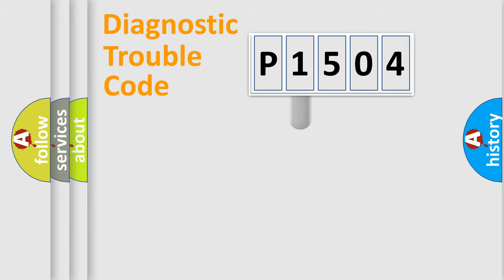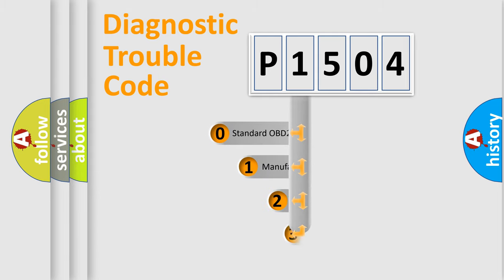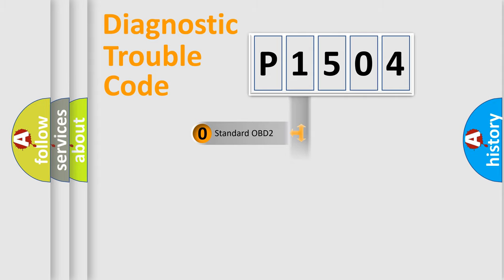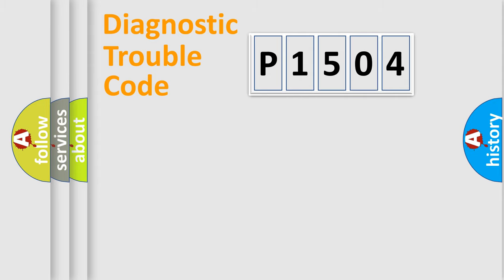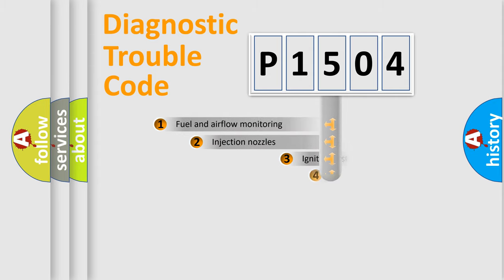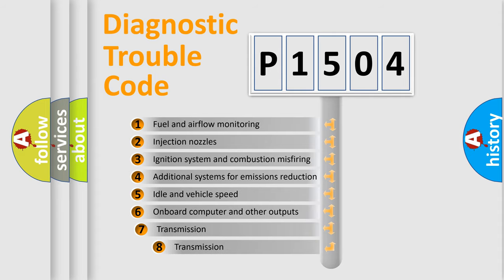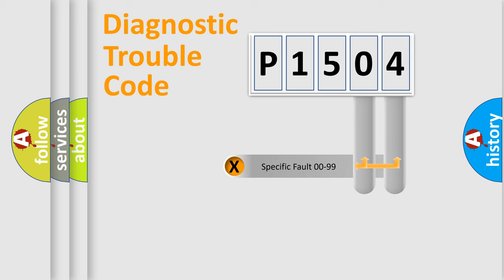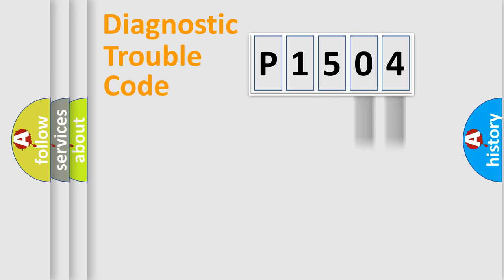This distribution is defined in the first character of the code. If the second character is expressed as zero, it is a standardized error. In the case of numbers 1, 2, or 3, it is a more specific expression of a car-specific error. The third character specifies a subset of errors. This distribution is valid only for the standardized DTC code. Only the last two characters define the specific fault of the group.